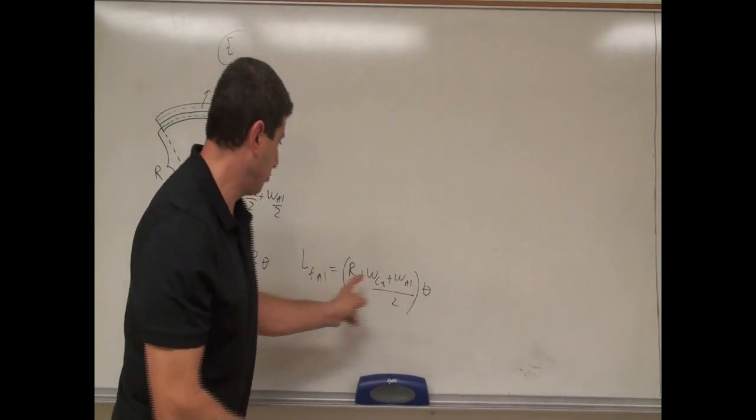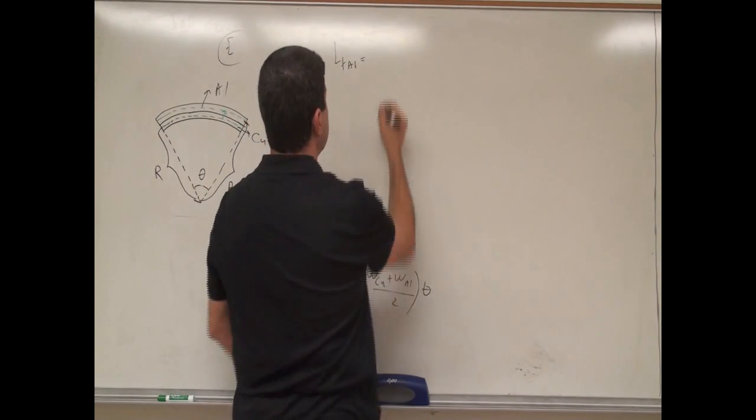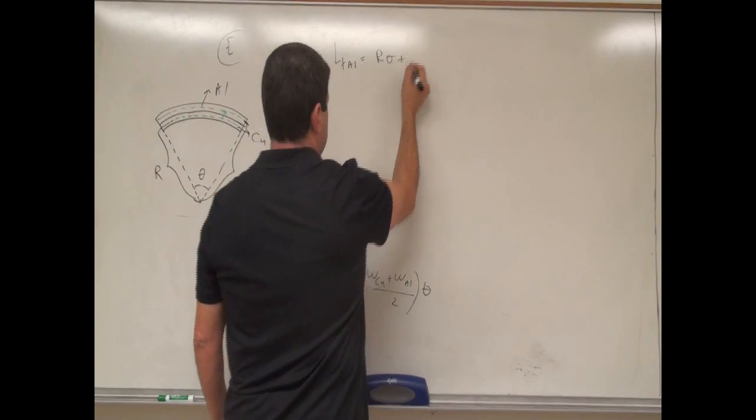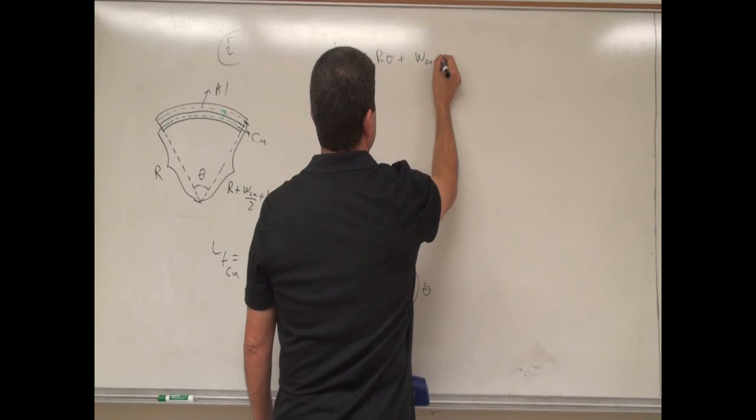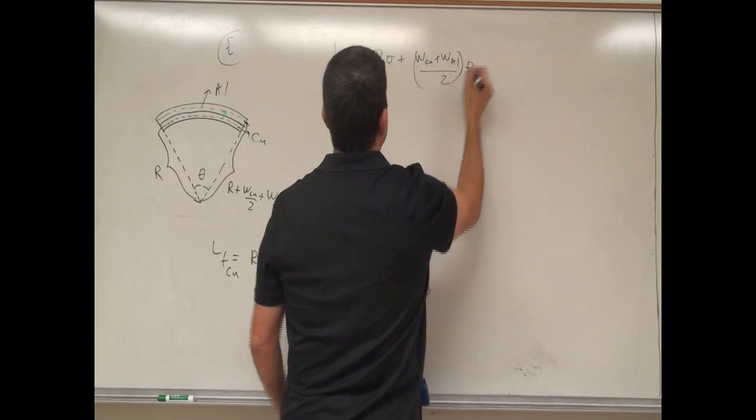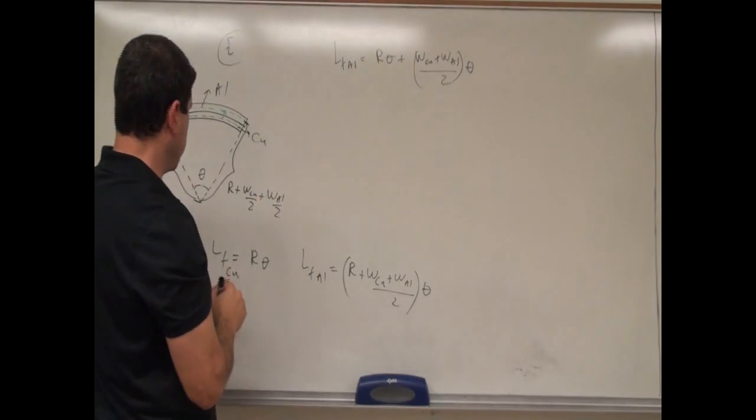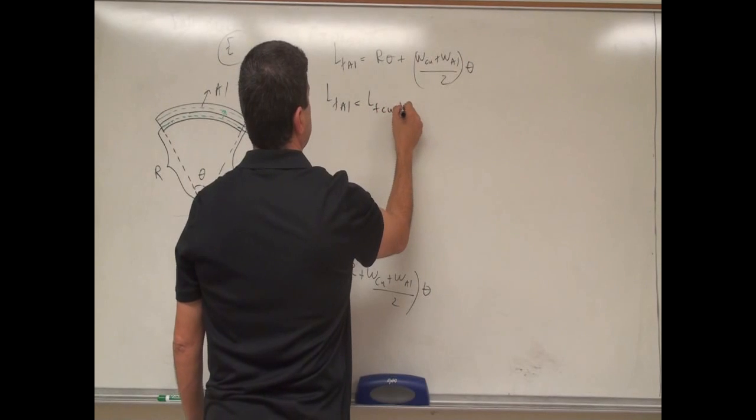So then, what we can do is distribute this in, l final aluminum is equal to r times theta, plus, then you have here, w copper plus w aluminum divided by two times theta, and then r final is just going to be the length final of the copper.